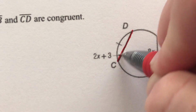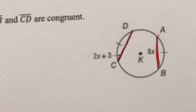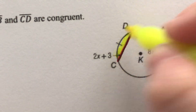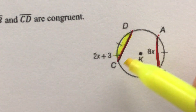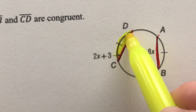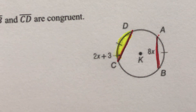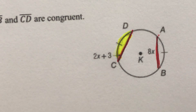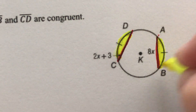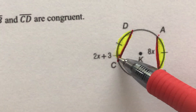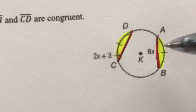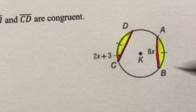Think of it like a pizza. If I slice a piece at a weird angle, the cut I make across the circular pizza is the chord, and the crust that gets separated off is the arc. The rule is: if the chords are the same length, then the arcs are the same measure. And vice versa — if the arcs are the same measure, then the chords have to be the same length.